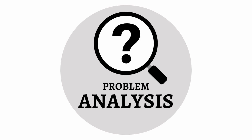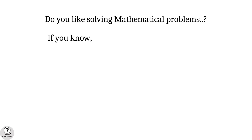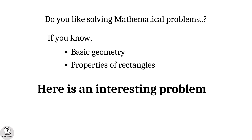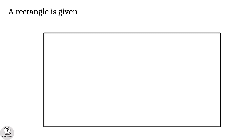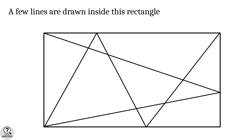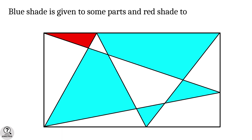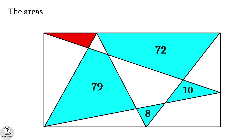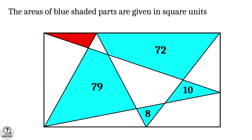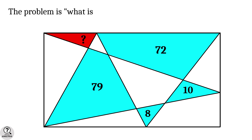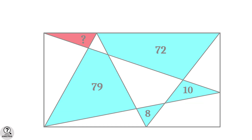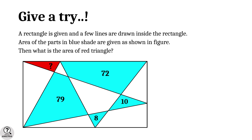Hello friends, back to Problem Analysis — it's me, Jesse. If you are interested in problem-solving and know the basic geometry and properties of rectangles, here is an interesting problem. A rectangle is given, a few lines are drawn inside it, blue shade is given to some parts, and red shade is given to one triangle. The areas of each blue shaded part are given in the figure. The problem is: what is the area of the red color triangle? If you want to attempt the problem, pause the video and give it a try.